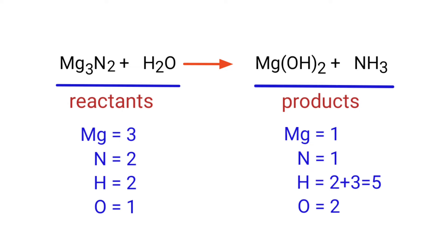In the reactants side there are 3 magnesium atoms, 2 nitrogen atoms, 2 hydrogen atoms, and 1 oxygen atom present. And in the products side there are 1 magnesium atom, 1 nitrogen atom, 5 hydrogen atoms, and 2 oxygen atoms present.